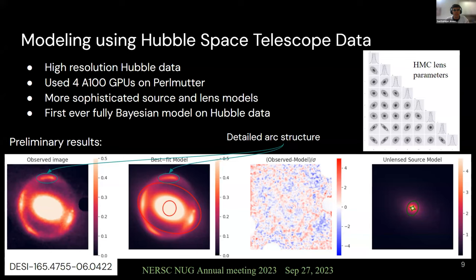For this system, we had high-resolution public data. Using four GPUs, we were able to model the system and handle not only its resolution but the large size of the image. Here at the bottom, you can see the observed image, and our best fit model at its right reproduces very well the very detailed structure of the arc, as you can see at the residual. This detailed structure of the arc ultimately comes from the source, as Nicholas explained. For that degree of detail, we needed to use a very complex model for the source, but it came at a computational price.